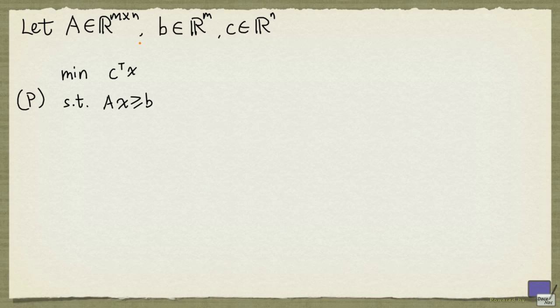Let A be an m by n matrix, B be an m-tuple, and C be an n-tuple. And we let P denote this linear programming problem.